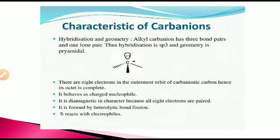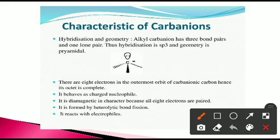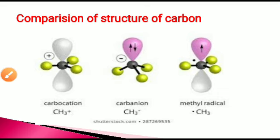Some characteristics of the carbanion: its hybridization is sp3, its geometry is pyramidal, it has 8 electrons completing the octet, and it behaves as a charged nucleophile. The carbocation acts as an electrophile, while the carbanion acts as a nucleophile. The carbanion is diamagnetic because all 8 electrons are paired. It is formed by heterolytic bond fission and reacts with electrophiles.